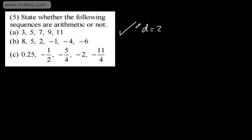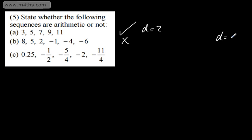If the sequence was going down, the common difference would be negative. Looking at the next part, it's going down by 3 each step, but then it's not consistent — so it's not arithmetic all the way through. It's arithmetic up to a certain point, but there's no overall common difference. If it were consistent, we'd have a common difference of negative 3.